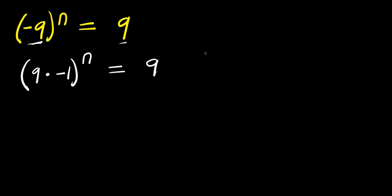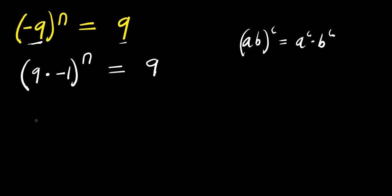If you have a times b raised to the power of c, this equals a power c times b power c. So we have 9 power n times negative 1 power n equals 9.